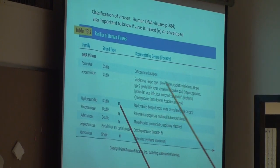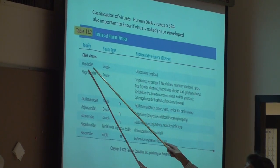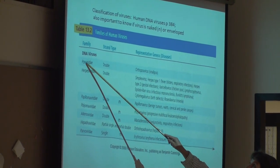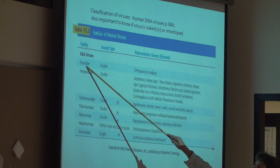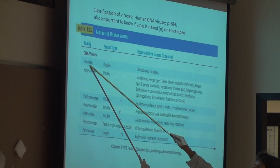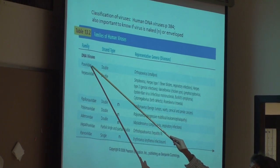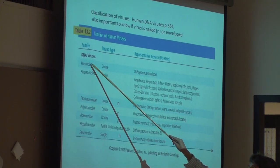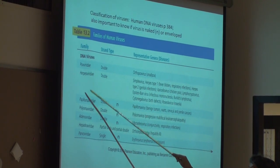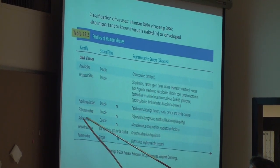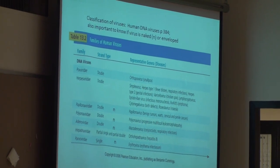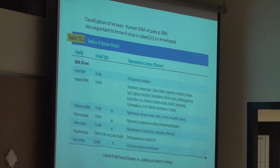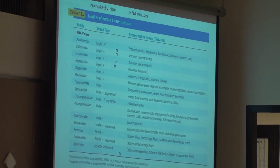Virus family names end in 'viridae.' Counting the DNA virus families: one, two, three, four, five, six, seven — so seven DNA virus families.